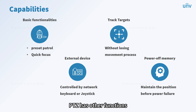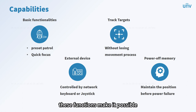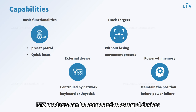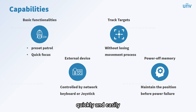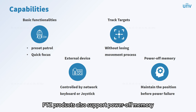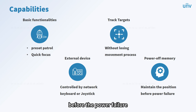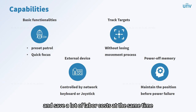In addition to the above two features, PTZ has other functions. PTZ products support preset patrol, fast focus, and target tracking, making it possible to provide better protection of the responsible area without losing any movement process. PTZ products can also be connected to external devices such as keyboards or joysticks, so we can remotely operate the camera quickly and easily. PTZ products also support power-off memory, meaning when power is reconnected, the camera returns to the position it was in before the power failure, eliminating the need for personnel to make readjustments. These capabilities make PTZ easy to use and save labor costs.